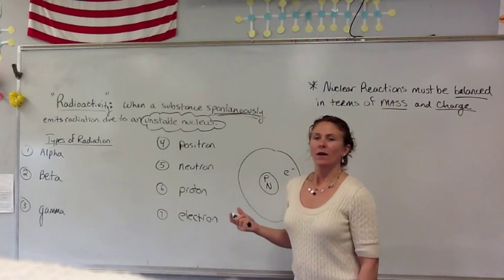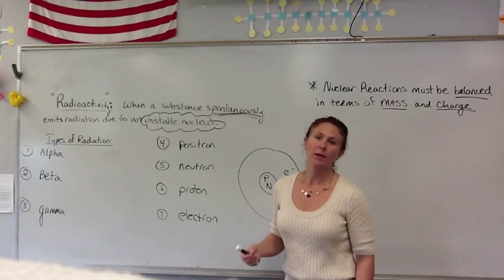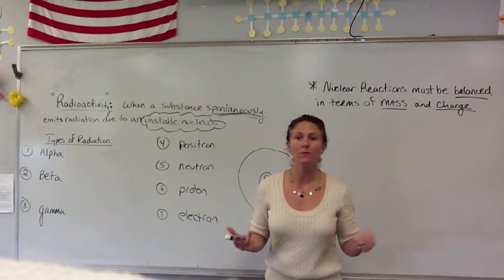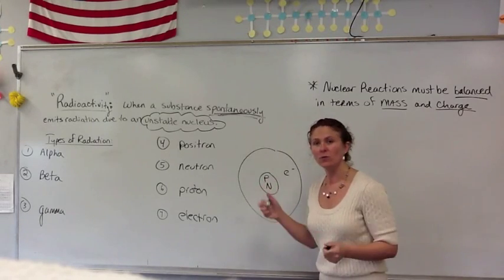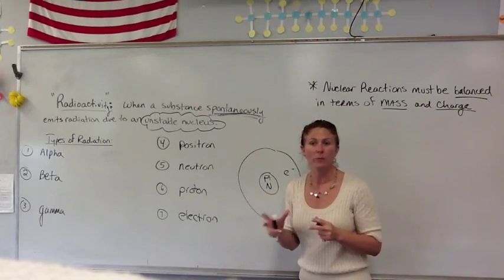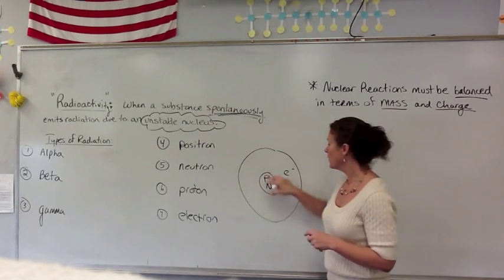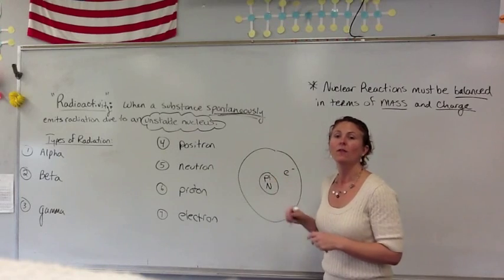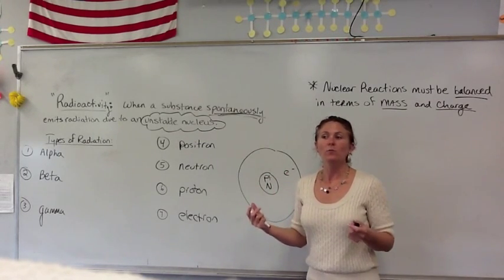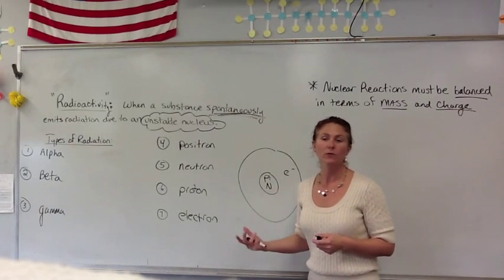Now we're going to talk about radiation. These nuclear reactions actually take place because many times a substance, especially atomic numbers 83 and above, they have so many protons inside of the nucleus that all those positive particles are repelling each other. And if the proton-to-neutron ratio isn't adequate enough to maintain that nucleus stability, then an atom spontaneously reacts in order to make itself more stable, and it's called a form of nuclear decay.